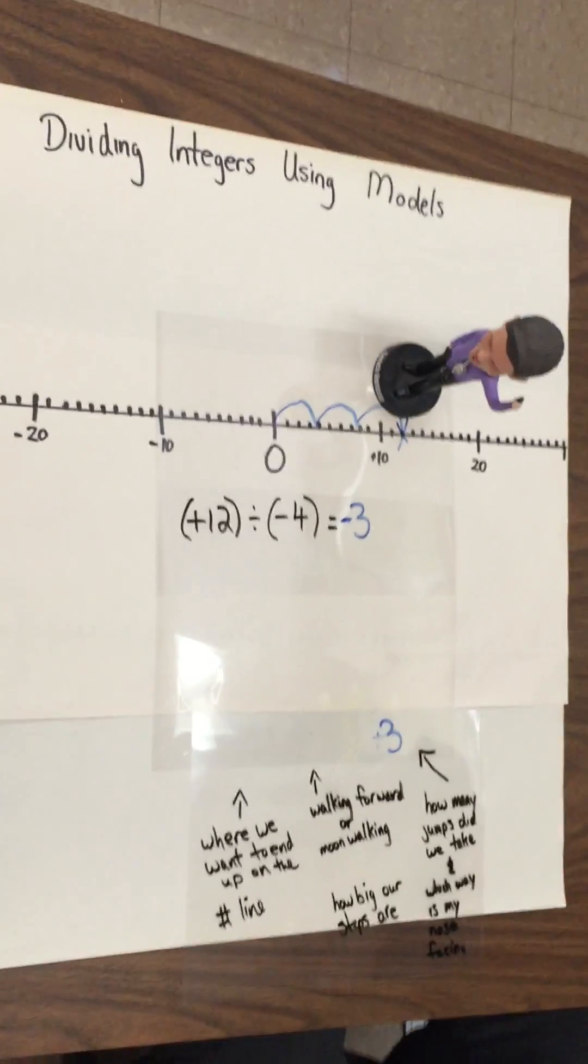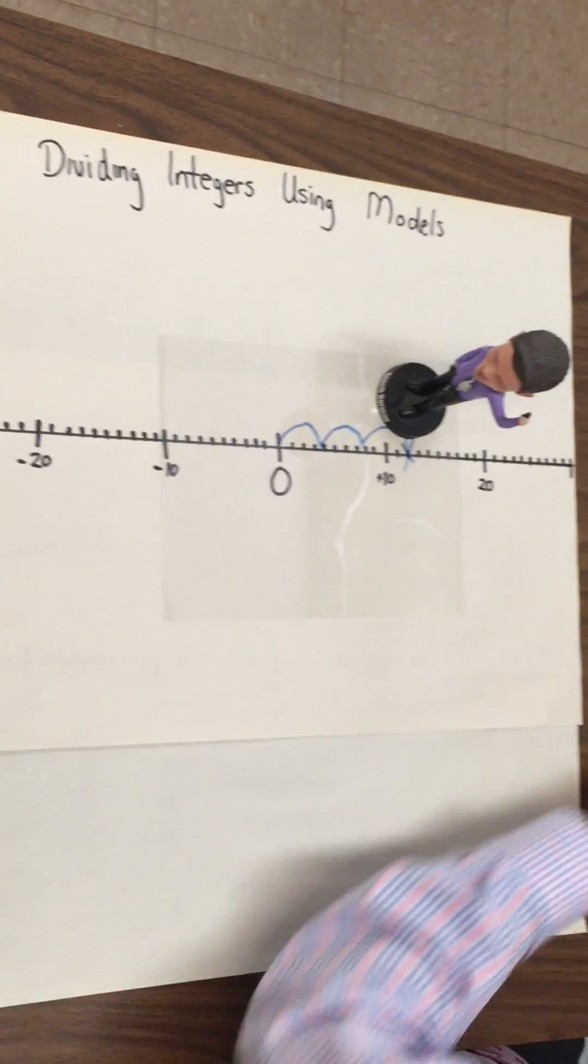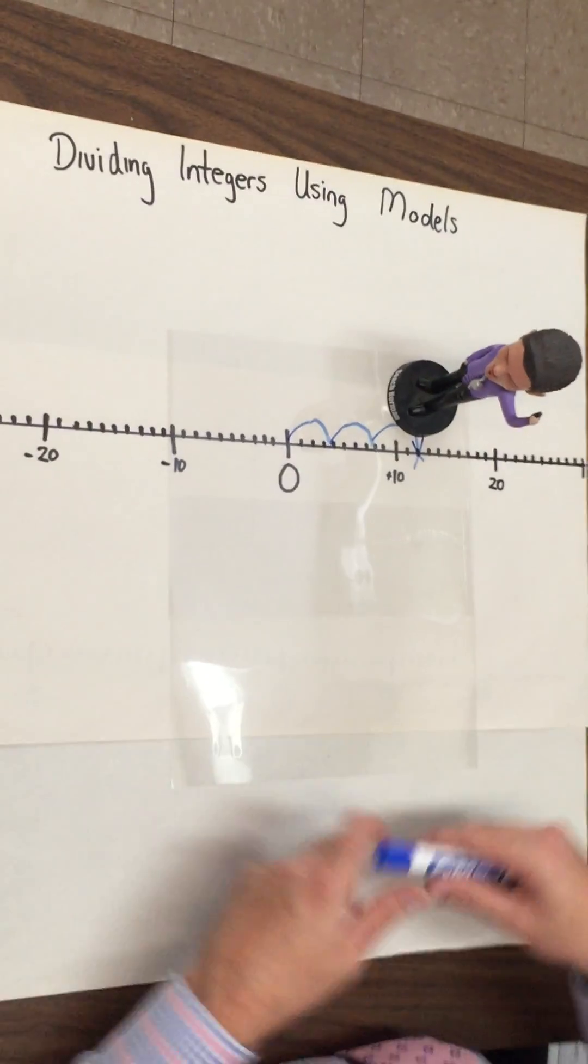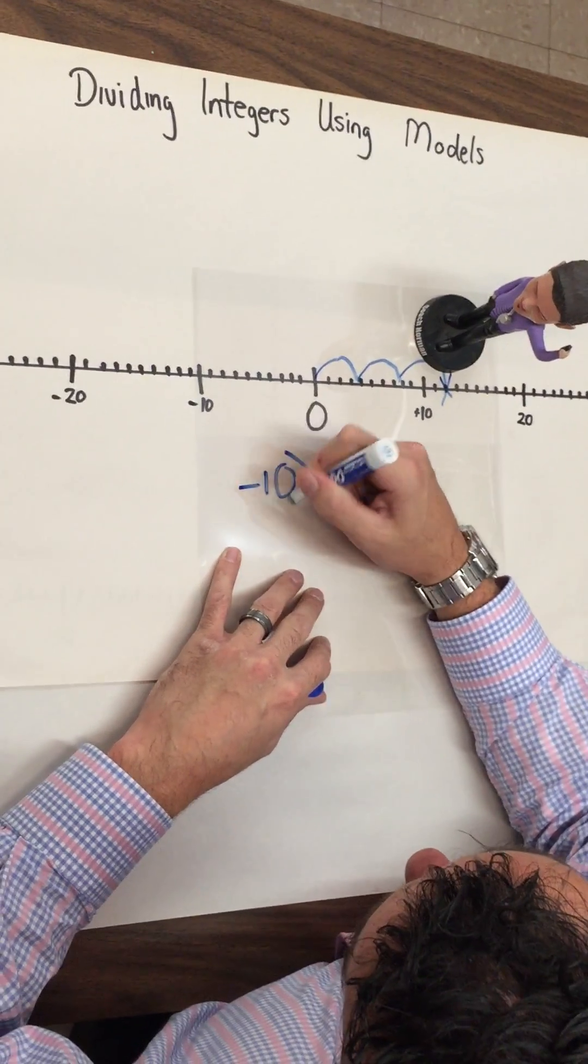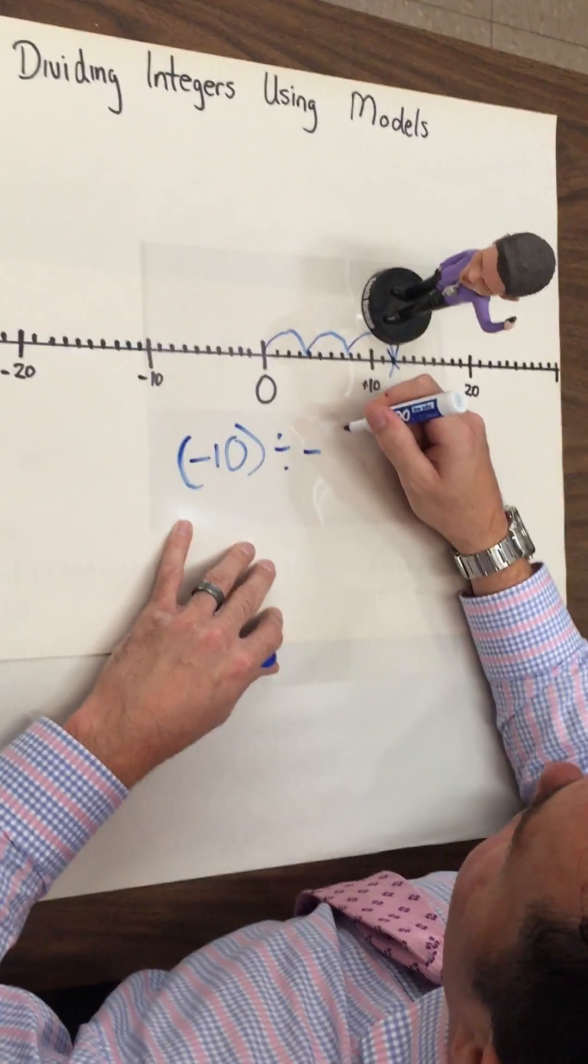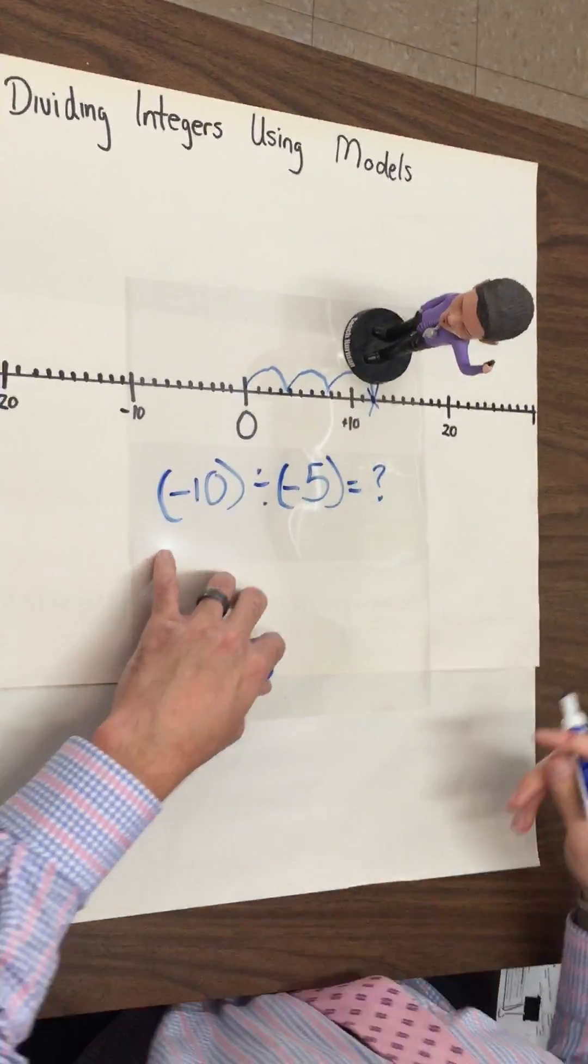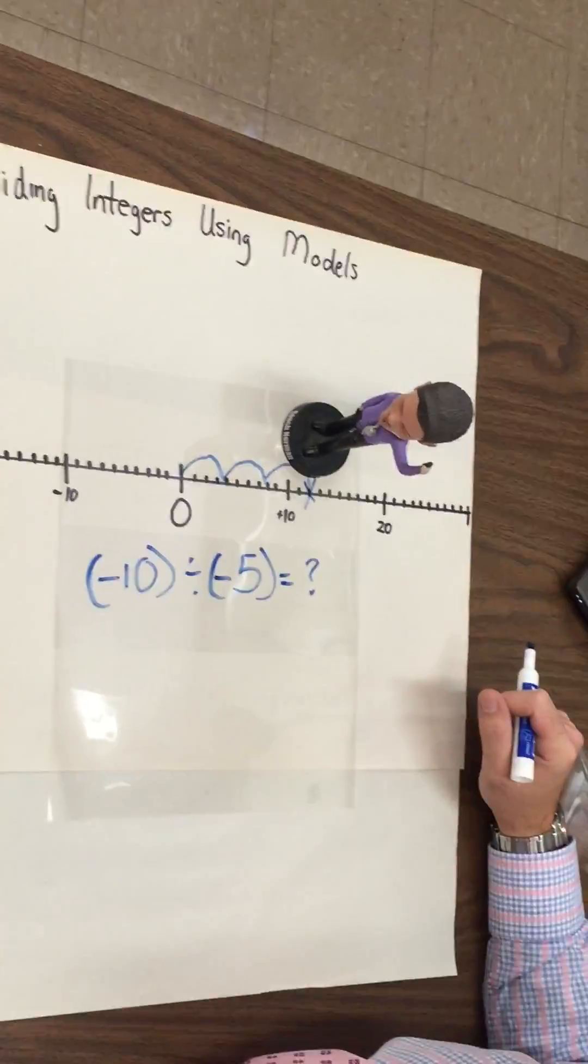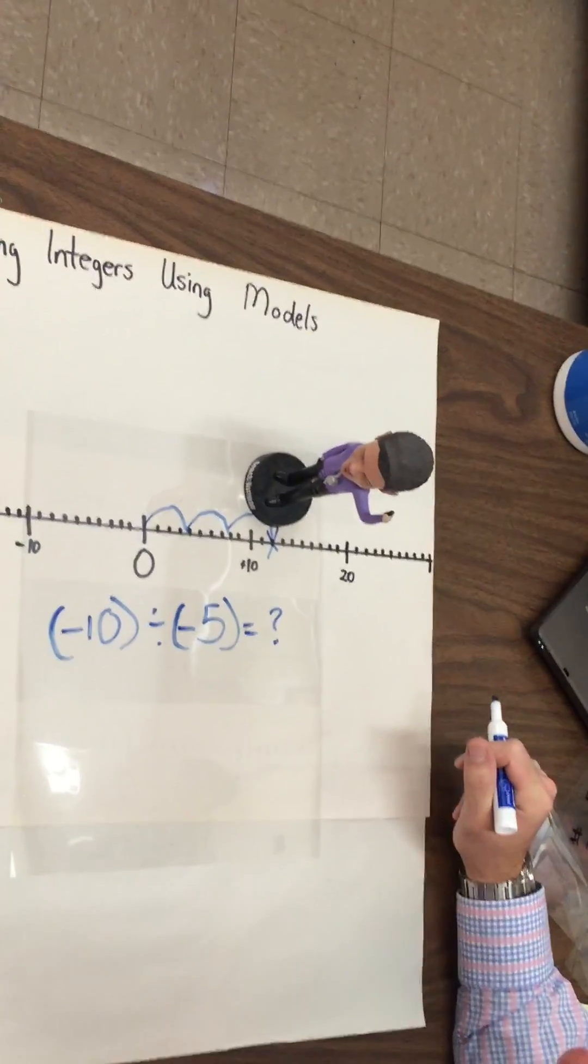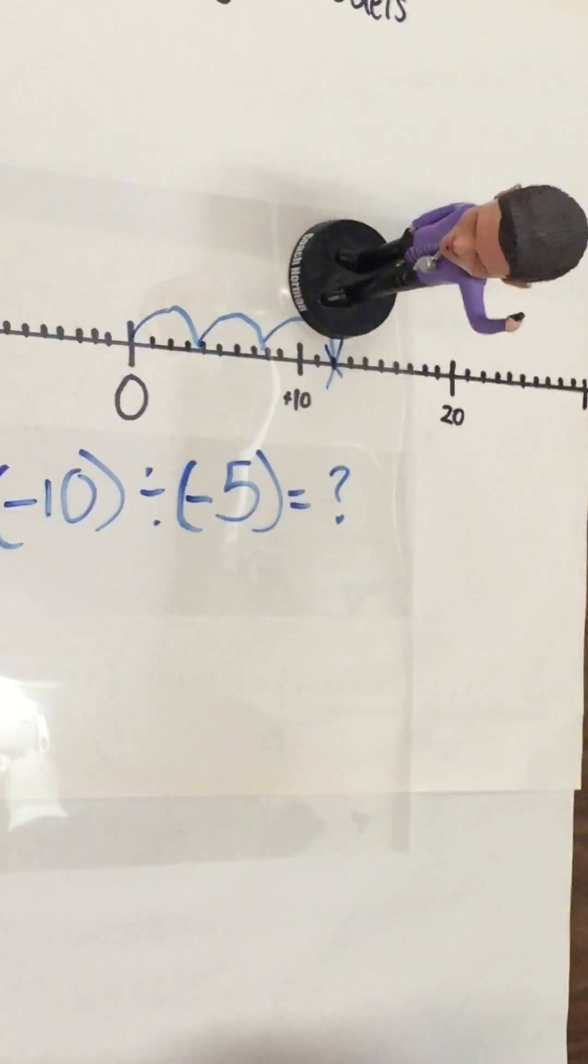Hopefully that helped you out grade eights. I'm going to give you one question. I want you to answer the following question for me. Let's do this one. Negative 10 divided by negative five is equal to what? Try it at home and comment under the video what you think your answer is. Have a great night. Hopefully this helped. I will see you tomorrow at class. Be prepared to work at your table groups. Have a good night.